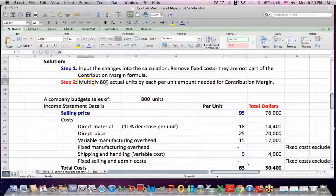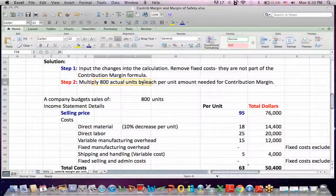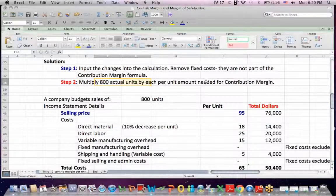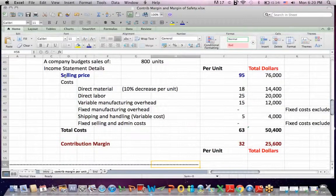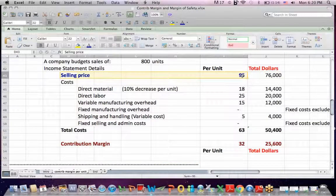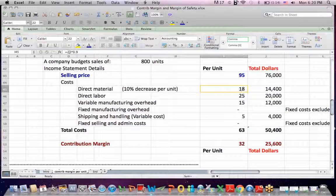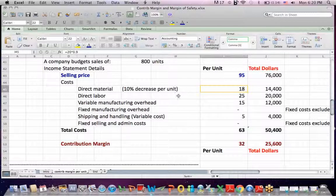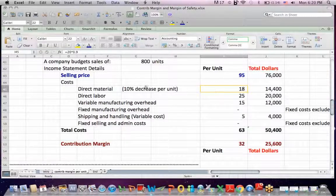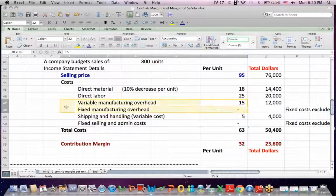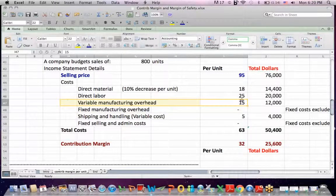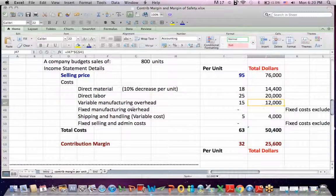The other step is, once we input that per unit information, we multiply everything by 800 units to get contribution margin in dollars. So we have a new sale price per unit, 95. We increase the direct materials by 10%. Direct labor per unit stays the same. Here's variable manufacturing overhead. We were given that $12,000 number.